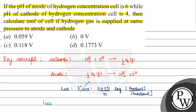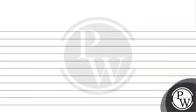So what will be E_cell? E_cell will be equal to 0.0591 divided by N — the number of electrons involved is 1 — log base 10 of the concentration of H⁺ at the anode divided by the concentration of H⁺ at the cathode.